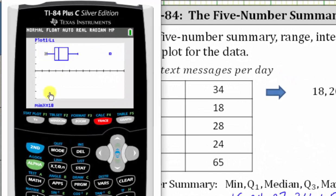Notice the value on the left is 18, the minimum. We press the right arrow. Quartile one is 24. Press the right arrow again. The median is 27. Right arrow again. Quartile three is 34.